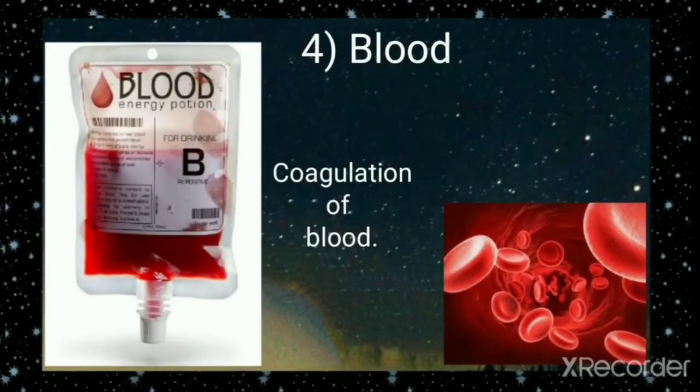What about blood? Blood is a natural colloidal solution found in our body. It is a colloidal solution of an albuminoid substance, and substances like alum and ferric chloride solution can cause coagulation of blood by forming a clot, which stops further bleeding.